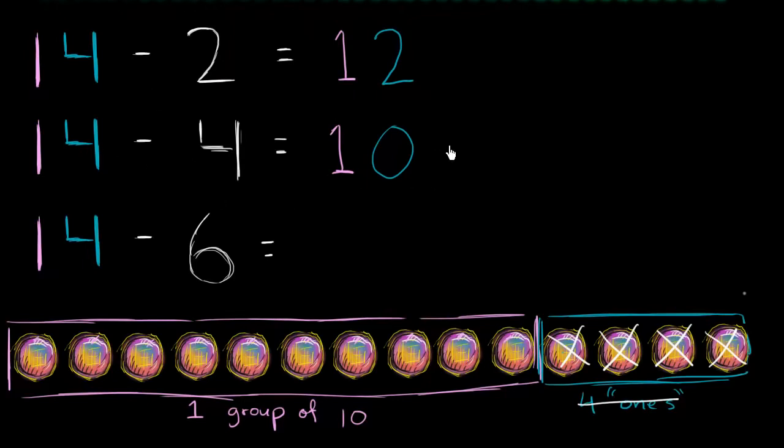Let me write this down. This is the same thing. 14 is 10 plus 4. 10 plus 4. This is 14. And then we're going to subtract 4. Then we're subtracting 4. So if you have 10 plus 4 minus 4, well, the 4 minus 4 is going to be 0. You're going to be left with 10 plus 0 or just 10. We can do the same thing up here.